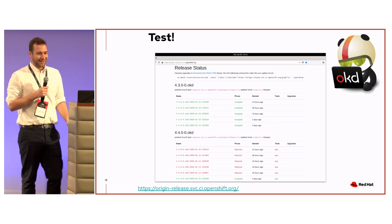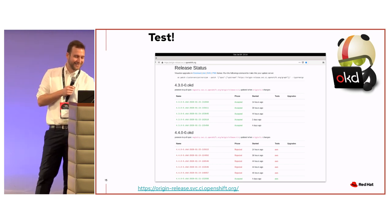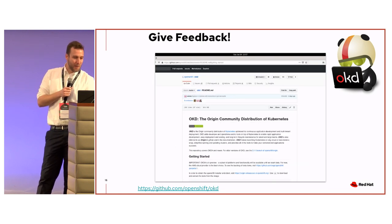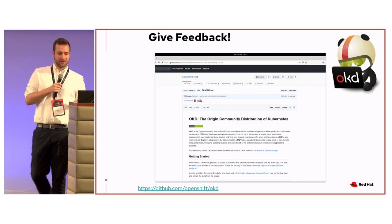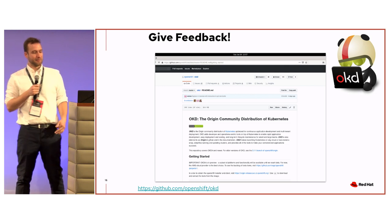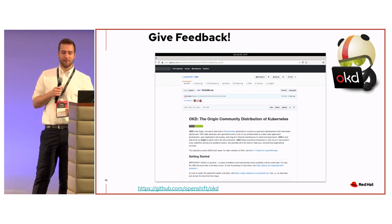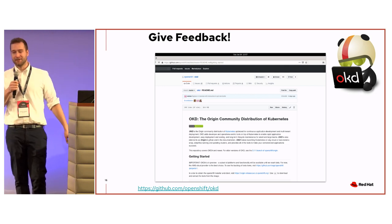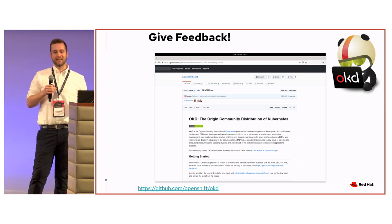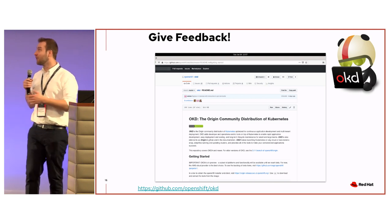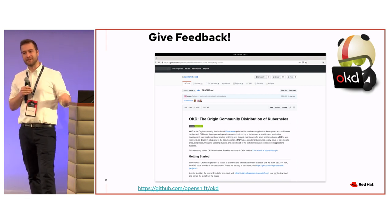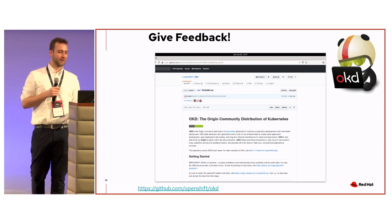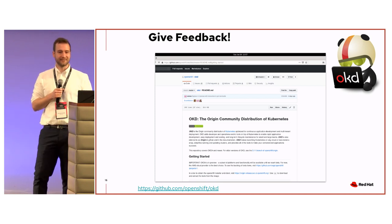Give feedback. We have two repositories. One for technical feedback, which is GitHub.com/OpenShift/OKD. So if you find any bug on OKD, file it there. We will triage it and send it to the responsible team internally to have it fixed as soon as possible.